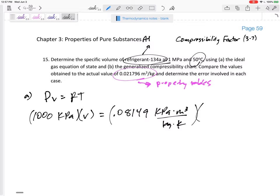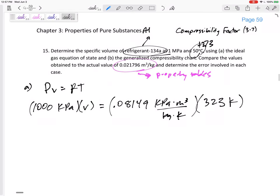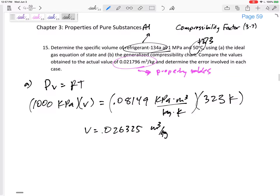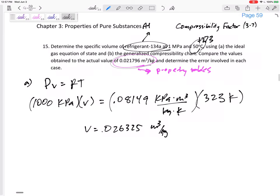And the temperature, 50. I can't just plug in 50, can I? No, no, no. 323, right? Add 273. You can do 273.15 if you want. Add 273. So the specific volume would be 0.026325 meters cubed per kilogram. How does that compare? What is the error right here?